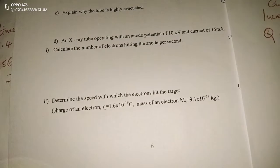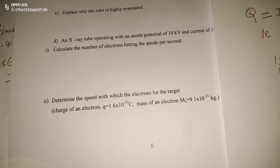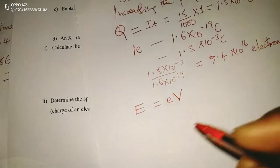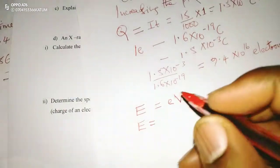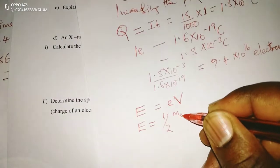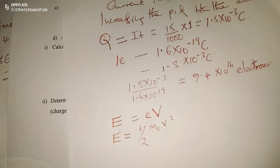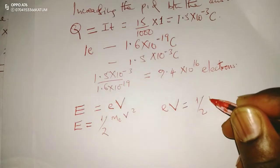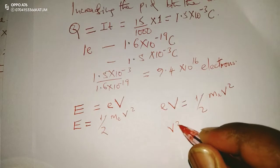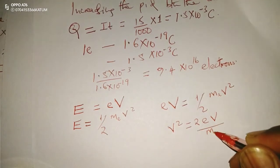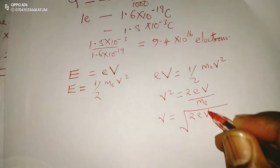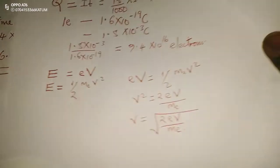Lastly, we determine the speed with which the electrons hit the target. The energy in the X-rays produced is given by: energy = electron charge × V. The same energy is also kinetic energy: ½ × mass of electron × velocity squared. Since the energies are equal, eV = ½mv², therefore v² = 2eV divided by mass of the electron, and we take the square root to find v.